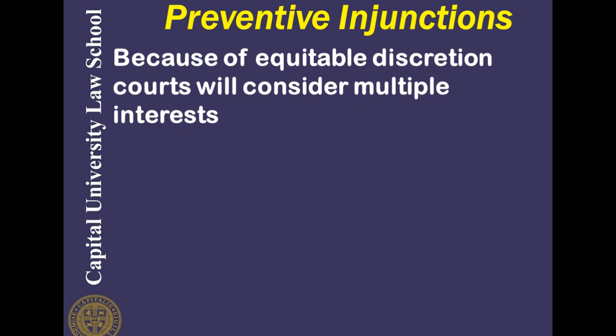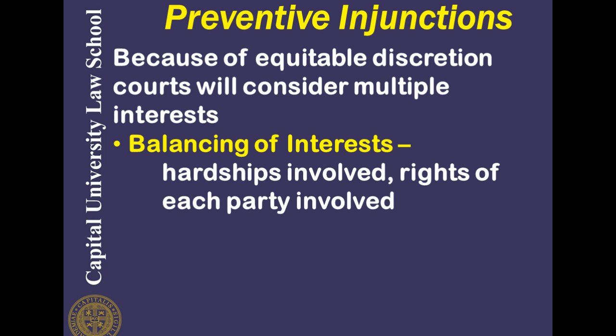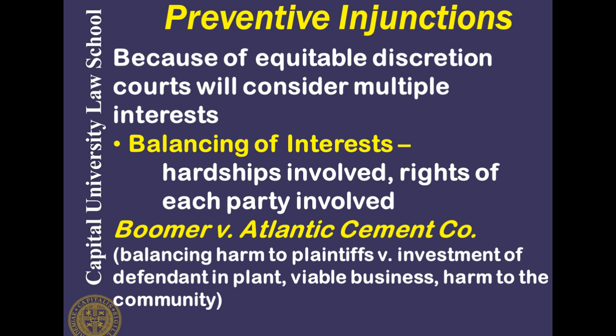Because this is an equitable action, the courts have discretion to consider multiple interests. They will look at the interests of the plaintiff but also at the interests of the defendant, balancing those against each other in deciding whether to grant or deny the injunction. So even if there is no adequate remedy at law and there is irreparable harm, the court will still engage in this balancing of interests. You see this balancing playing out in Boomer v. Atlantic Cement.